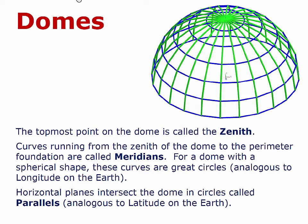The topmost point on the dome is called the zenith. Curves running from the zenith to the perimeter foundation are called meridians. For a dome with a spherical shape, these curves are great circles — if you track a meridian all the way around to the other side, that is a portion of a great circle. These curves are analogous to longitude on the earth.